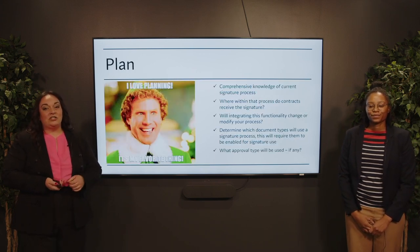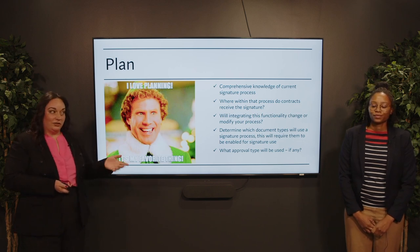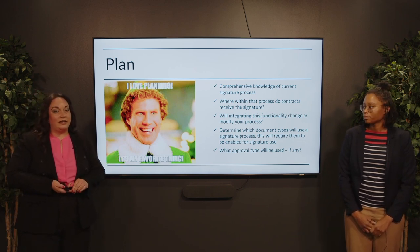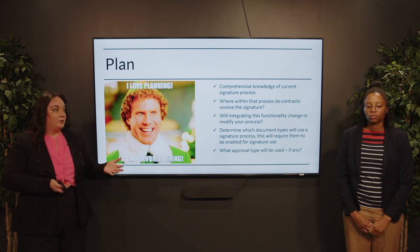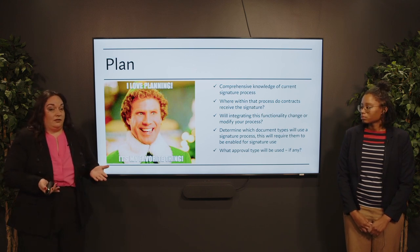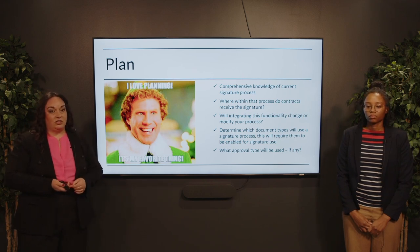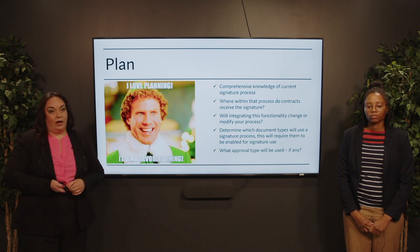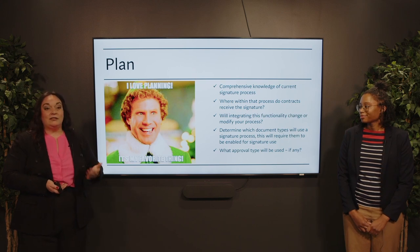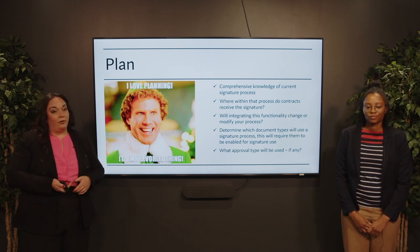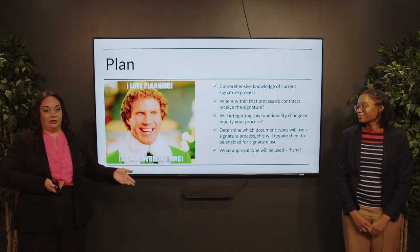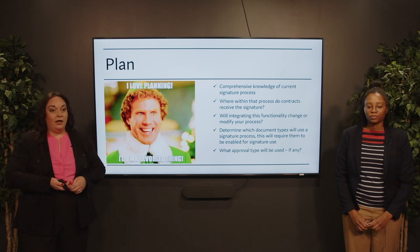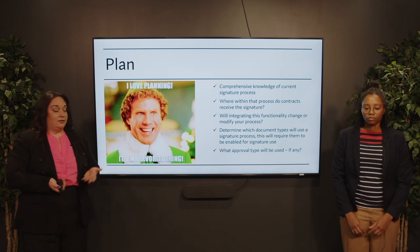Let's talk planning. The first thing that's so important — and that we often find is overlooked — is having a comprehensive knowledge of your current process. From there, what will the process to capture those documents and those signatures look like in current state? Where within your contract process do you find that? Will the integration of the functionality change or modify your existing process? You're going to want to determine what document types you actually want to use this with. And what approval type will you use with this process, if any?